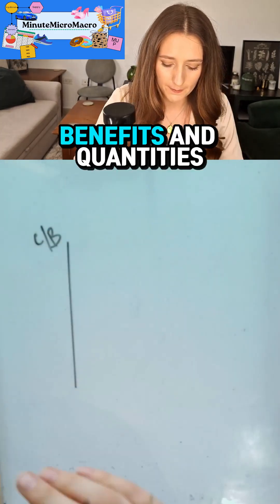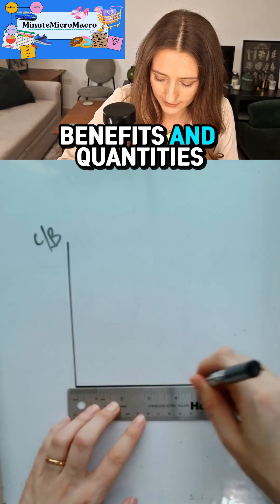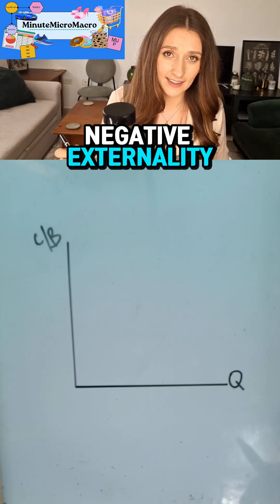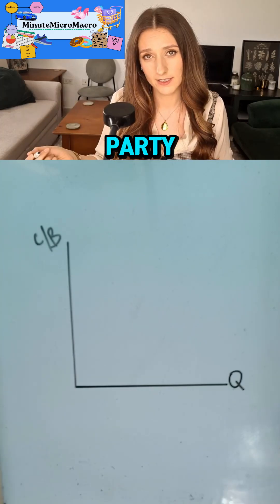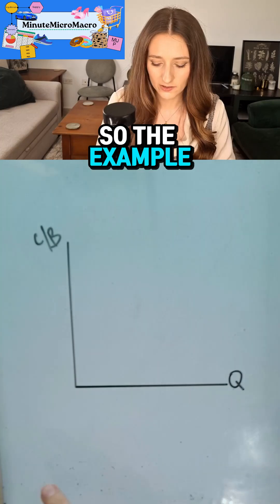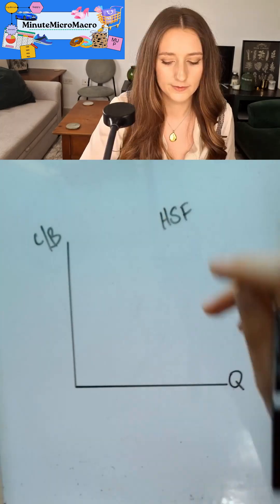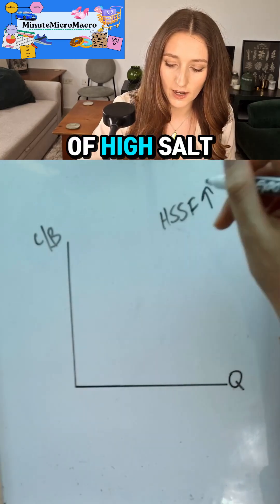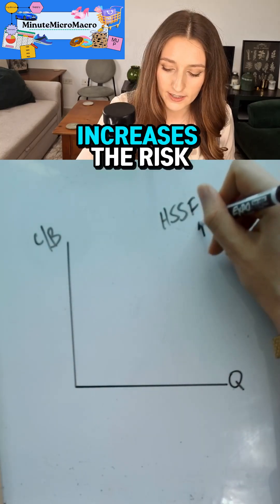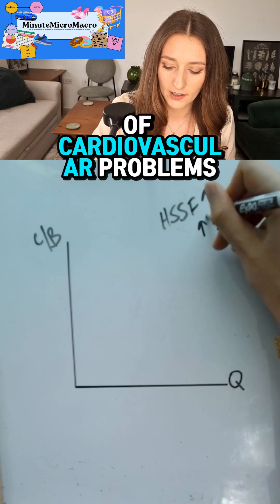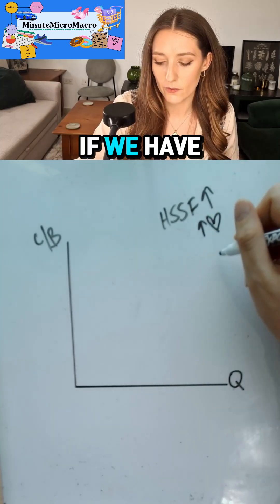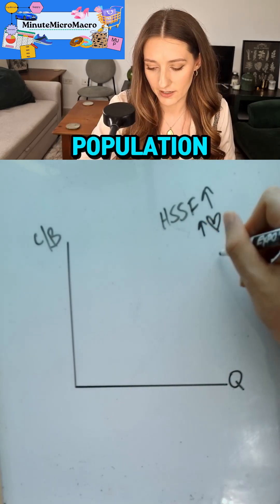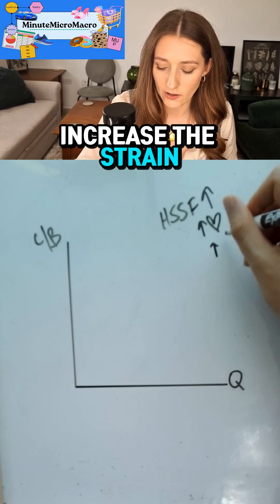We're looking at costs, benefits and quantities. We're going to think of an example of a good that has a negative externality — a cost to a third party because of the consumption of it. The example is high sugar, salt, and fatty foods. The increased consumption of these foods increases the risk of cardiovascular problems, which over an entire population will increase the strain on the health service.